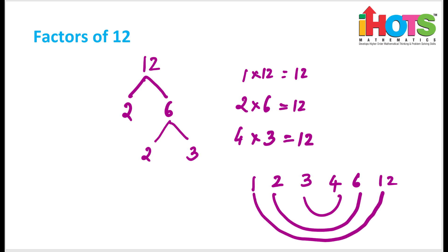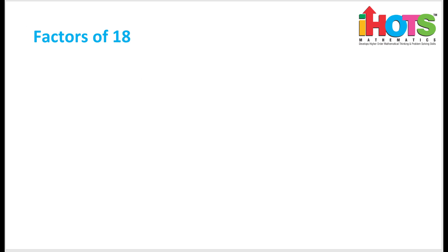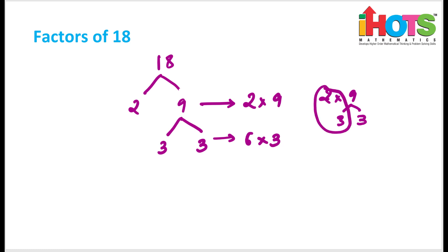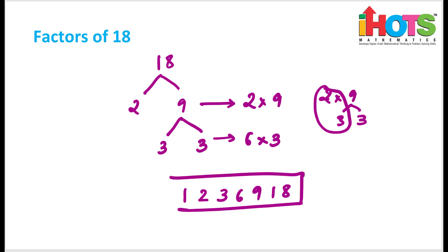So the factors of 12 are 1, 2, 3, 4, 6, 12 — very easy. Now let me take 18. I can divide by 2, so I have 9 here. Now 9 does not divide by 2, so it goes into 3: 3 into 3. So this is 2 into 9, and then 2 into 3 gives 6 into 3. The factors are 1, 18, 2, 9, 3, 6.